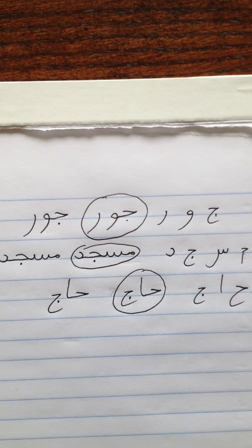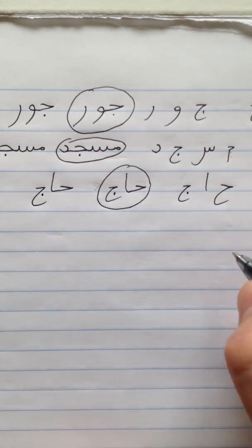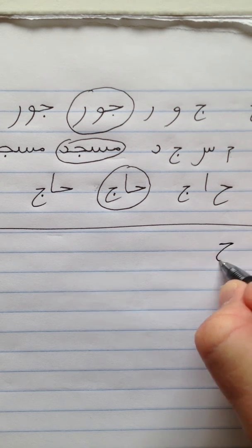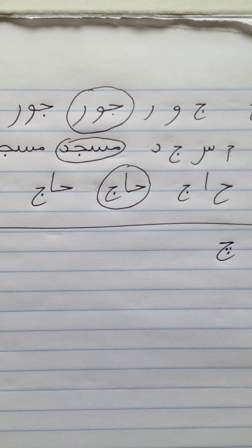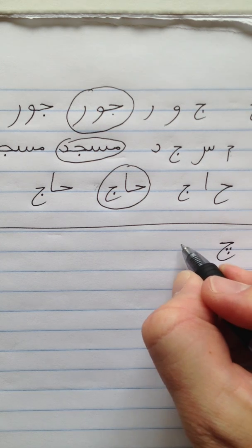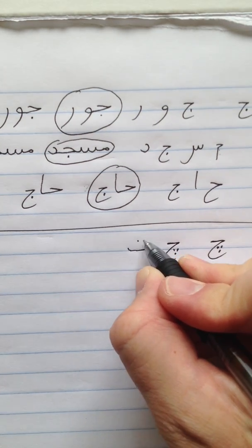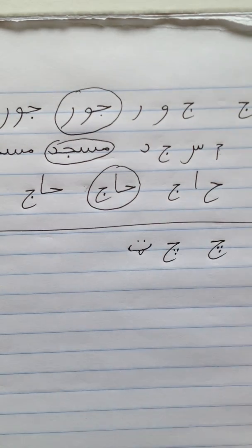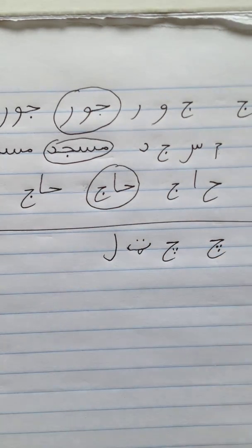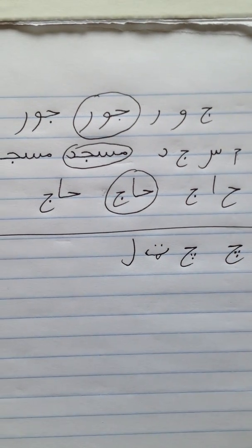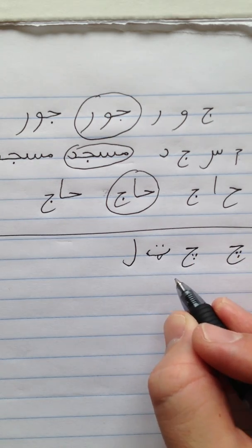Now let's move on to the letter CHE. Remember CHE has holes like Swiss cheese and makes the CHE sound like CH in English. Let's start with the word CHETAL. The letters in this word are CHE, TE, which has two dots and a tongue, and LAM. This word, by the way, means dirty.